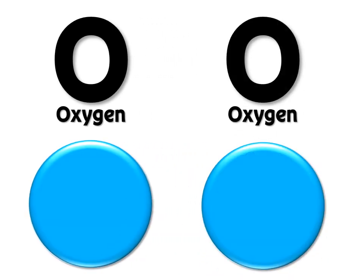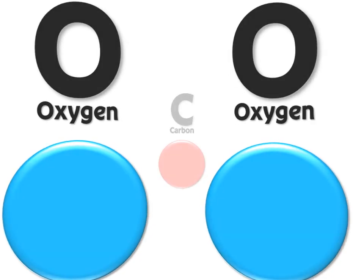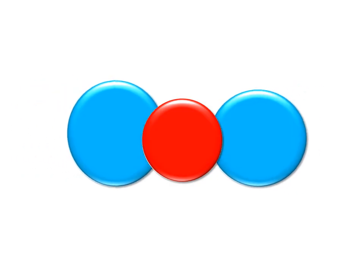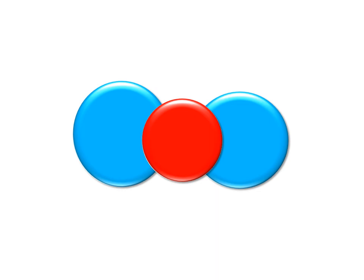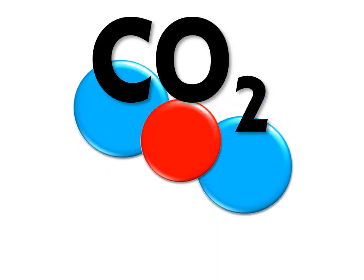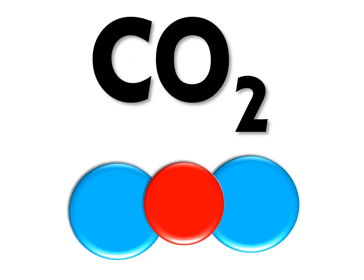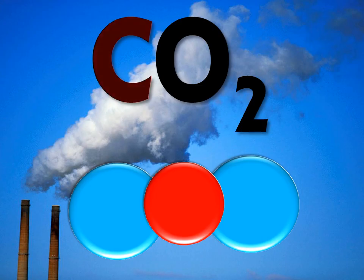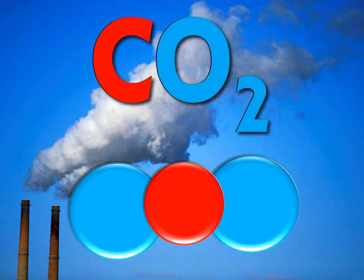Now let's take two oxygen atoms and one carbon atom. When we add them together, a new chemical compound is formed. One carbon and two oxygens — this forms the chemical compound known as CO2. CO2 is carbon dioxide. Carbon dioxide is made up of one carbon and two oxygen atoms. Carbon dioxide is an important chemical compound in the photosynthesis equation, as all plants need carbon dioxide to survive.